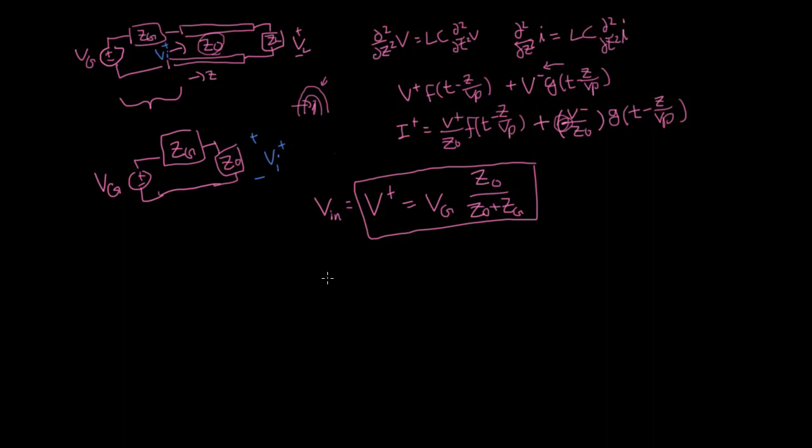And then separately, we also want to know what the current is. So what's the initial current going in? What's the relationship? Well, remember, our rule right now is that if it's going in the positive Z direction, you just divide by Z naught. If it's in the negative direction, you have to divide by negative Z naught.